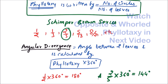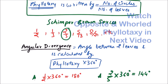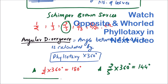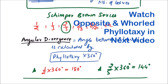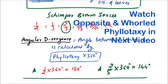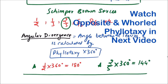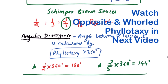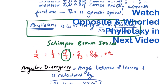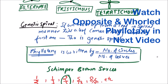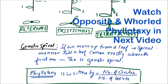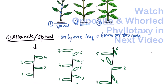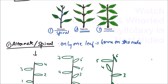So this covers spiral or alternate phyllotaxy. In the next video, we will discuss the other two types of phyllotaxy — opposite and whorled. Thanks for watching.